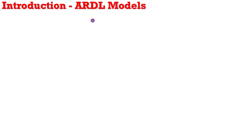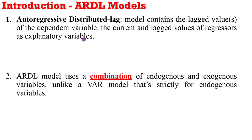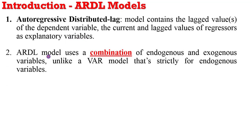From Crunch Econometrics, thank you for joining us today. We'll be talking about auto-regressive distributed lag models. This is a model containing the lagged values of the dependent variable, the current and lagged values of regressors as explanatory variables. The ARDL model uses a combination of endogenous and exogenous variables, unlike a VAR model which is strictly designed for endogenous variables.